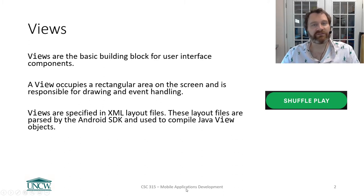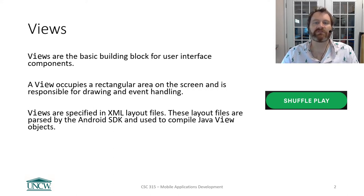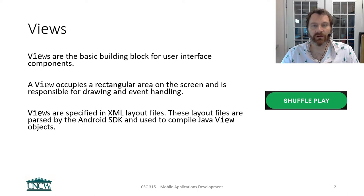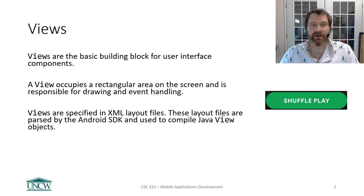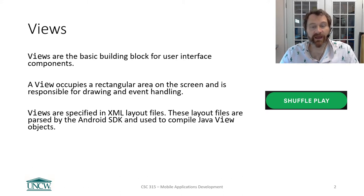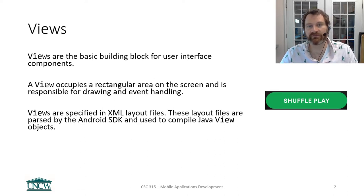This is all about views and view groups in this chapter. Views are the basic building block for user interface components. In Android, a view occupies a rectangular area on the screen, and the view is also a class responsible for drawing and handling events within its rectangular box. Views have been specified in XML layout files that accompany your activity. Android reads these XML files that you create for your layouts and converts them all into Java objects that subclass the Java view class.